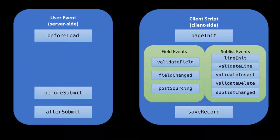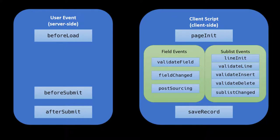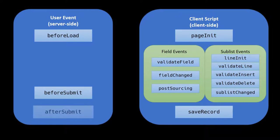Once the user has changed all the fields and added any lines they want to, they're ready to save the record. They click the save button in the UI, which triggers the save record event on the client side. The save record event is basically our last chance to validate the user's data before the record makes it to the database. Once save record completes successfully, all of the new data is sent to the server side, triggering before submit in our user event — which runs before the new data is actually stored in the database. Once before submit completes successfully, all of the new data is stored in the database, and then after submit gets fired.